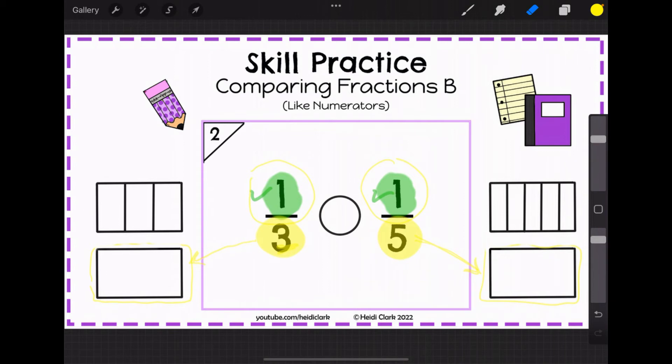So since the numerators are the same, the denominators tell us everything we need to know. Do you want to share with three people or five people? If you want a big piece then do you want a small denominator or a big denominator? You want a small denominator.